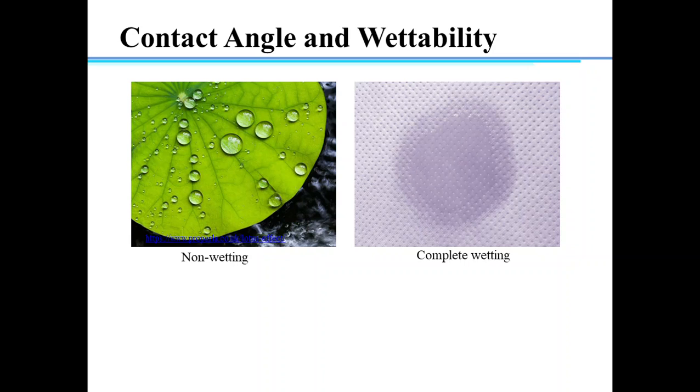An example of surface that is non-wetting is the lotus leaf, which is shown here. We can see that contact angle between water droplet and lotus leaf is much higher than 90 degrees and water droplets form nearly spherical shape.